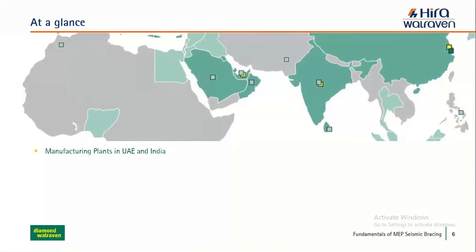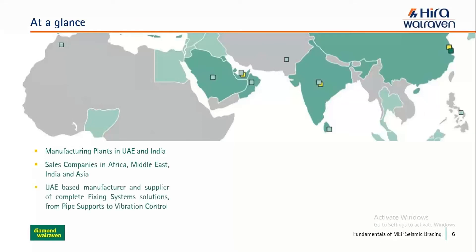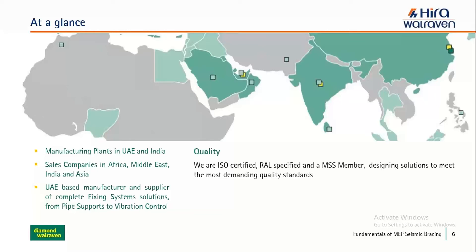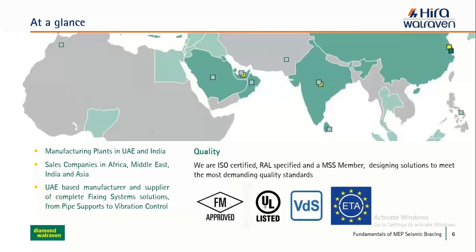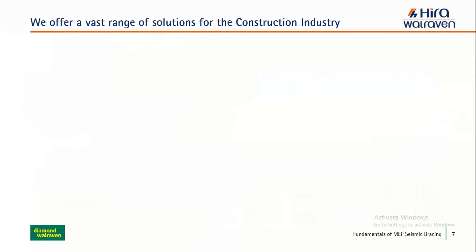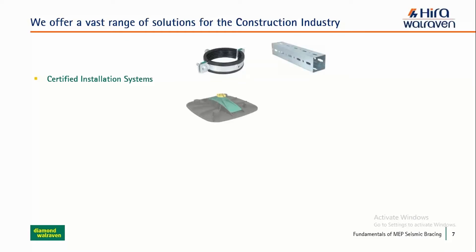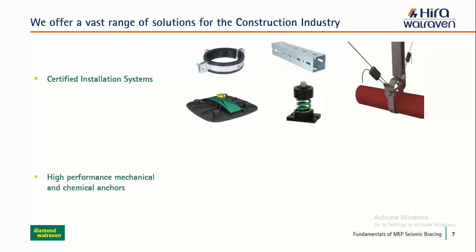At a glance, we have manufacturing plants in UAE and India and sales companies across the region. We are a manufacturing supplier of complete fixing system solutions, from simple pipe support to vibration control and seismic. We are ISO certified, RAL-specified, and MSS members. We design solutions to meet demanding quality standards such as FM, UL, VDS, ETA, and RAL. Our range includes certified pipe support systems, channel and rail systems, rooftop supports, vibration isolators, seismic systems, and high-performance mechanical and chemical anchors.